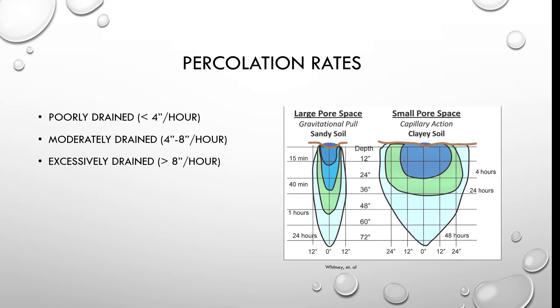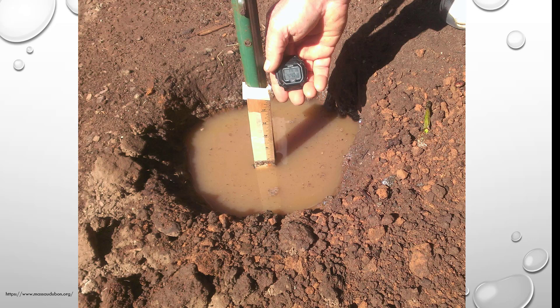Percolation rates: poorly drained is going to be less than four inches per hour; excessively drained is greater than eight inches per hour. Capillary action is the ability of a liquid to flow in narrow spaces without the assistance of — or even in opposition to — things like gravity. Here is a picture of a percolation test, and I'll post a video so you can think about doing that for your site.